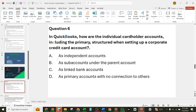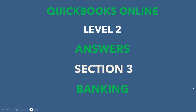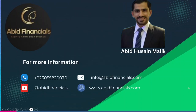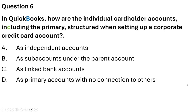Question 6: In QuickBooks, how are the individual cardholder accounts structured when setting up a corporate credit card account? Options are: as independent accounts; as sub accounts under the parent account; as linked bank accounts; or as primary accounts with no connection to others. The correct answer is option B: as sub accounts under the parent account.